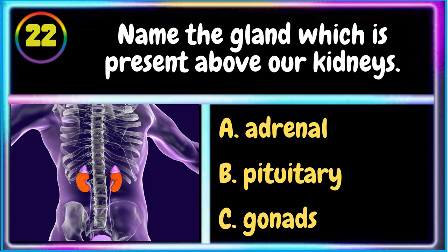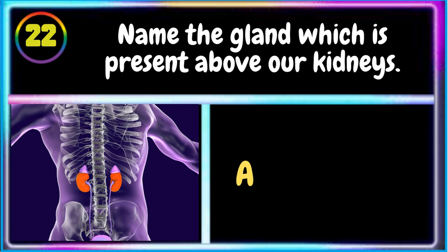22. Name the gland which is present above our kidneys? A. Adrenal. The correct answer is A. Adrenal.